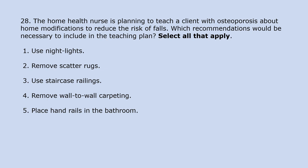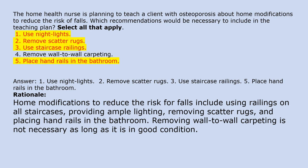The home health nurse is planning to teach a client with osteoporosis about home modifications to reduce the risk of falls. Which recommendations would be necessary to include? Select all that apply. 1. Use night lights. 2. Remove scatter rugs. 3. Use staircase railings. 4. Remove wall-to-wall carpeting. 5. Place handrails in the bathroom. Answer: 1, 2, 3, 5. Rationale: Home modifications to reduce fall risk include using railings on all staircases, providing ample lighting, removing scatter rugs, and placing handrails in the bathroom. Removing wall-to-wall carpeting is not necessary as long as it is in good condition.